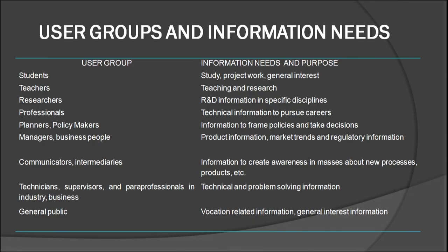The table in the next slide shows information needs of user groups and the purposes for which they need information. A student needs information for study, project reports, and general interest. A teacher needs information for teaching and research. Researchers need information for research and development in a specific discipline. Professionals need technical information for pursuing their career. Planners and policy makers need information to frame policies and take decisions. Managers and business people need information on market trends and regulatory matters. Communicators and intermediaries need information to create awareness about new processes and products. Technicians, supervisors, and professionals in industries need information for problem-solving, and the general public needs vocation-related and general interest information.